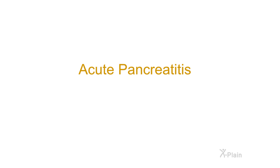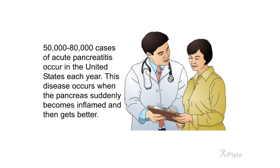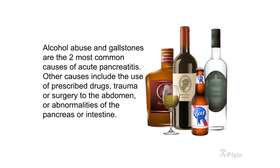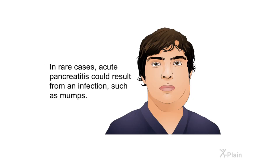Fifty thousand to eighty thousand cases of acute pancreatitis occur in the United States each year. This disease occurs when the pancreas suddenly becomes inflamed and then gets better. Some patients have more than one attack but recover fully after each one. Alcohol abuse and gallstones are the two most common causes. Other causes include prescribed drugs, trauma or surgery to the abdomen, abnormalities of the pancreas or intestine, or in rare cases an infection such as mumps.